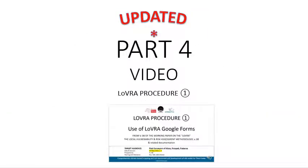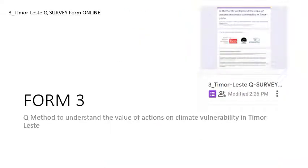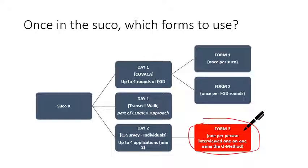This is part 4 of LOVA procedure number 1 and we're going to cover right now Form 3, which is used to record the Q-method interview. The Q-method is a method to understand the value of actions on climate vulnerability in Timor-Leste. There are three forms that must be filled in: Form 1 per suku, Form 2 for different rounds of focal group discussion or the Kovaca method, and Form 3 is for the Q-method. You're going to use one form for each interview applying the Q-method.